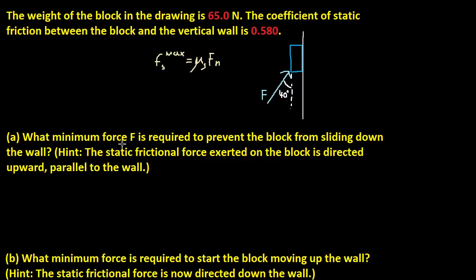What is the minimum force F required to prevent the block from sliding down the wall? Hint: the static frictional force exerted on the block is directed upward, parallel to the wall. I'm kind of sleepy right now, so please excuse anything that doesn't make sense to you. I might ramble on about things, so just ignore that part.